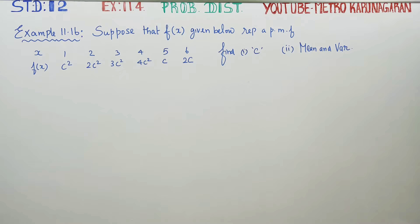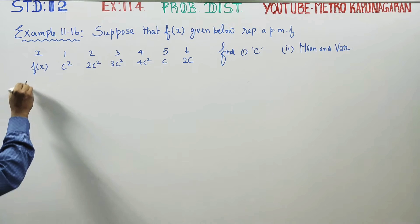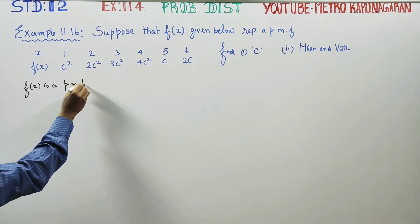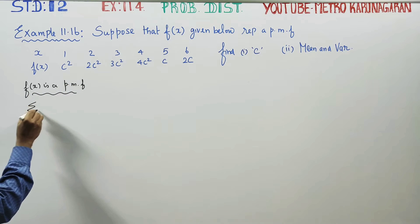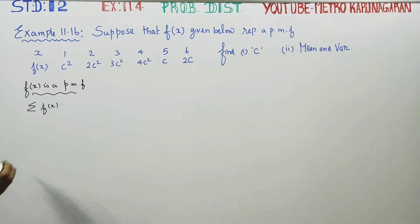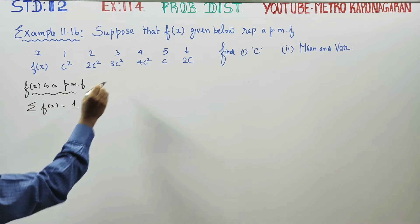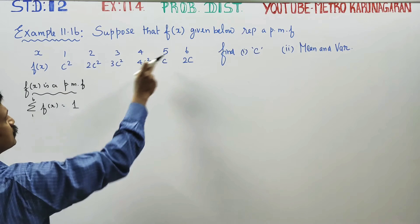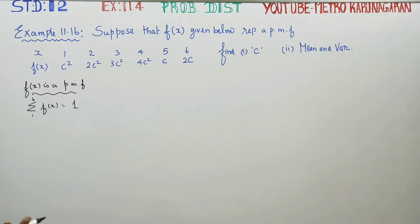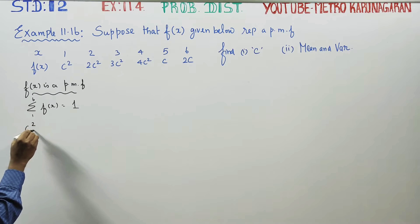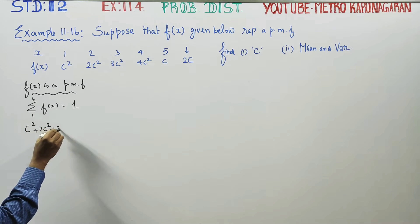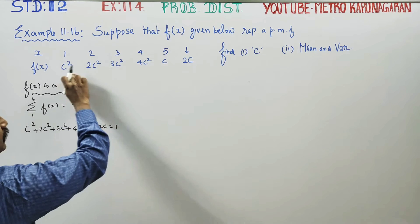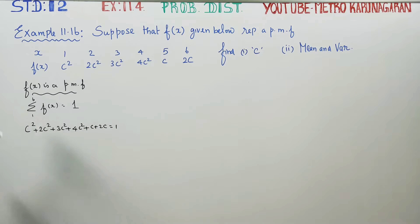First rule: f(x) is a probability mass function. That's why we know that sigma f(x) equals 1 — that is the total. For x equal to 1 to 6, the sum of all f(x) values from 1 to 6 equals 1. Total probability is always 1.